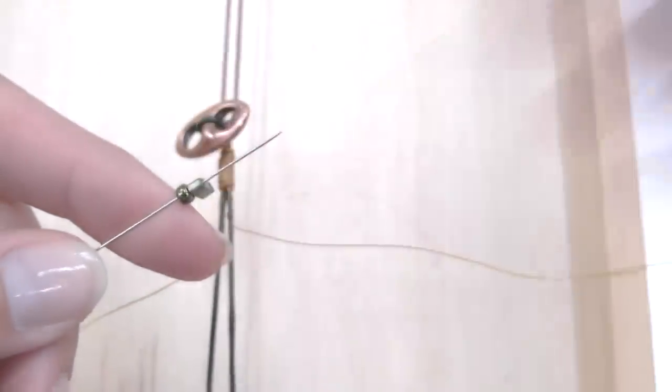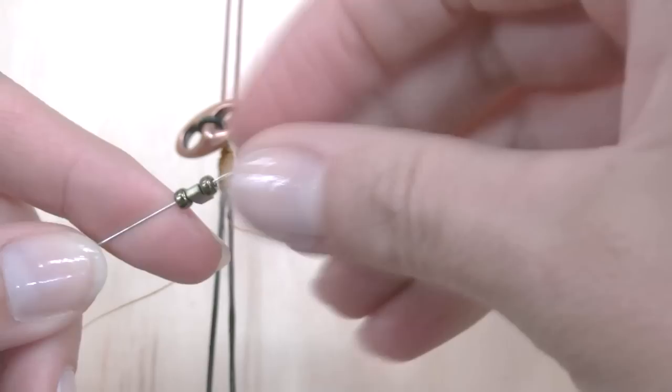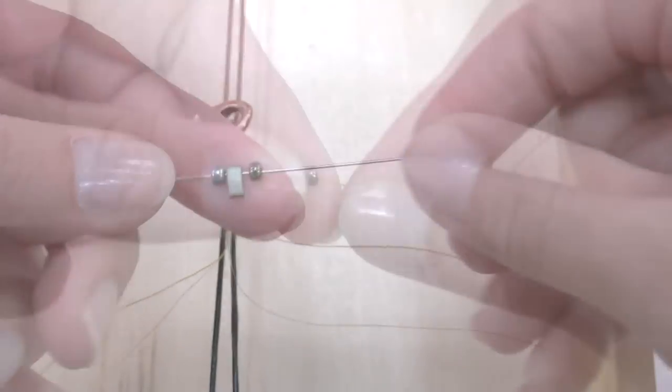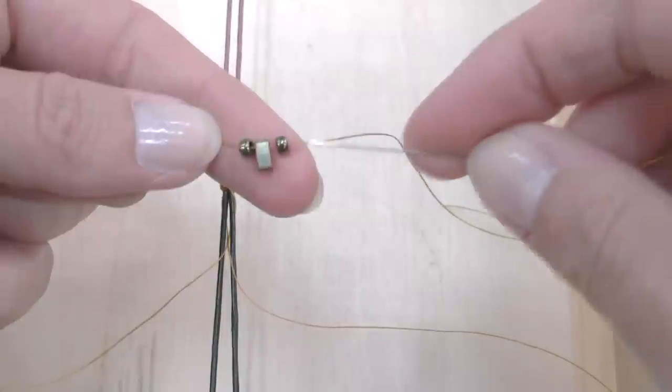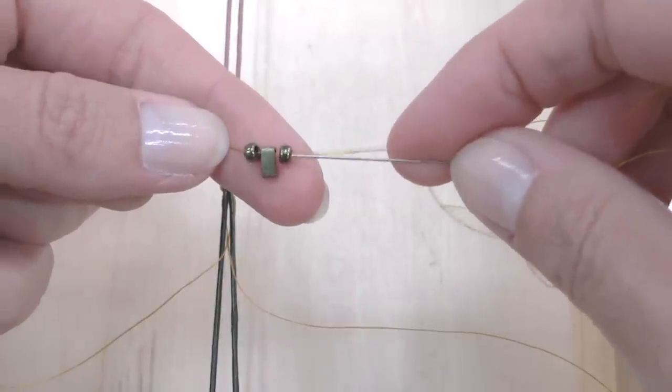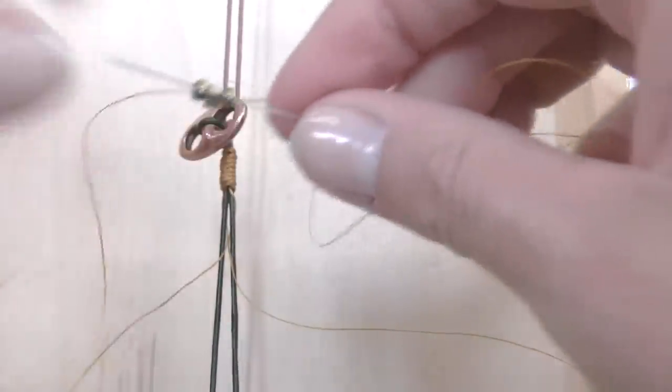To start building the bracelet I insert one A0 seed bead, then one half Tila, then another seed bead in one thread tip. Then I pass the other extremity inside the same beads in the opposite way in order to get the thread crossed.